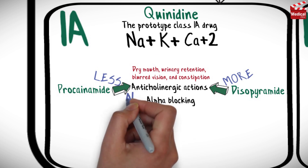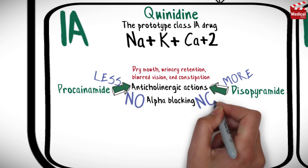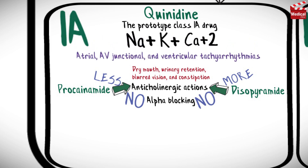Neither procainamide nor disopyramide has alpha-blocking activity. Quinidine is used in the treatment of a wide variety of arrhythmias, including atrial, AV junctional, and ventricular tachyarrhythmias.